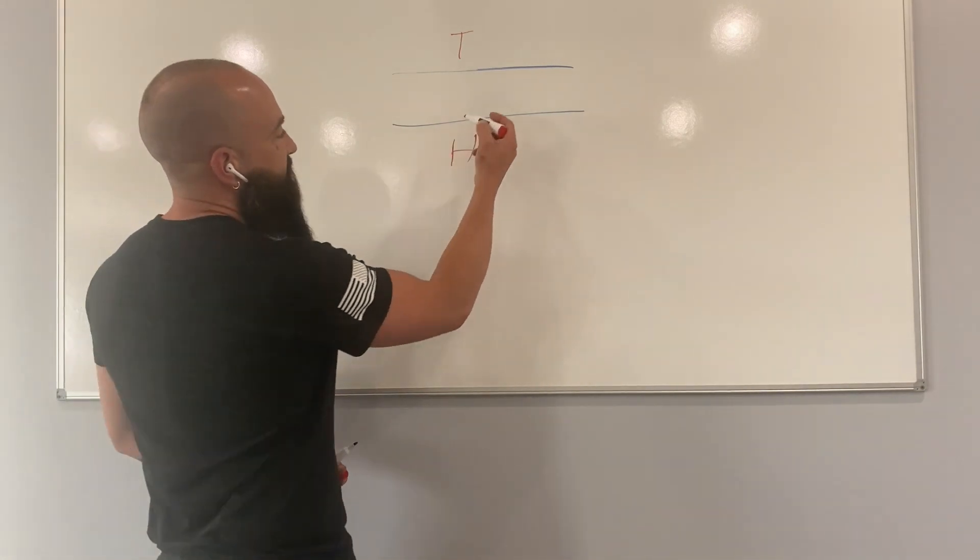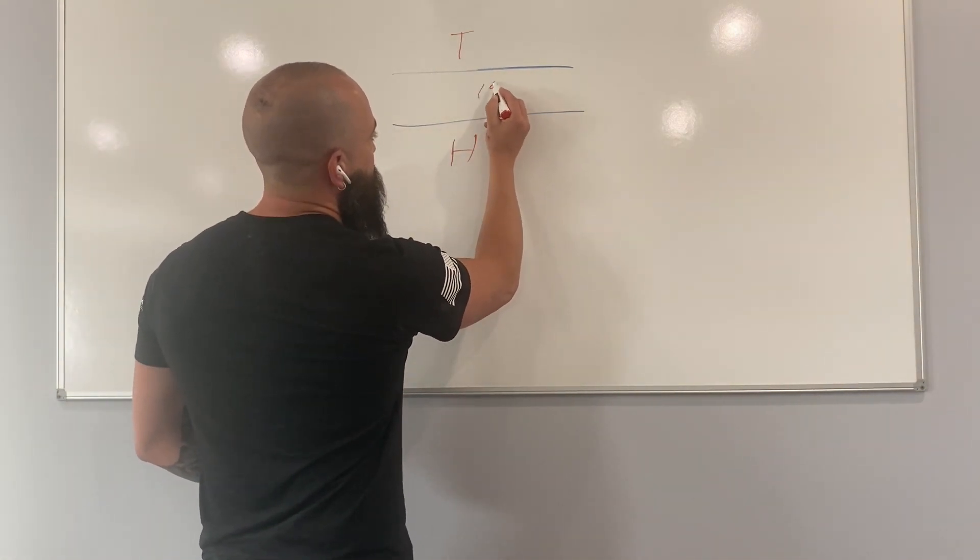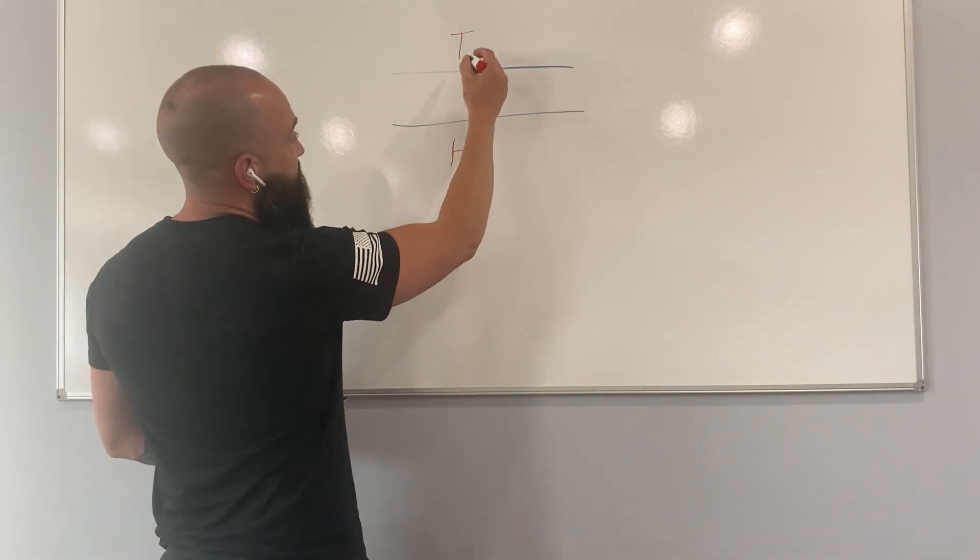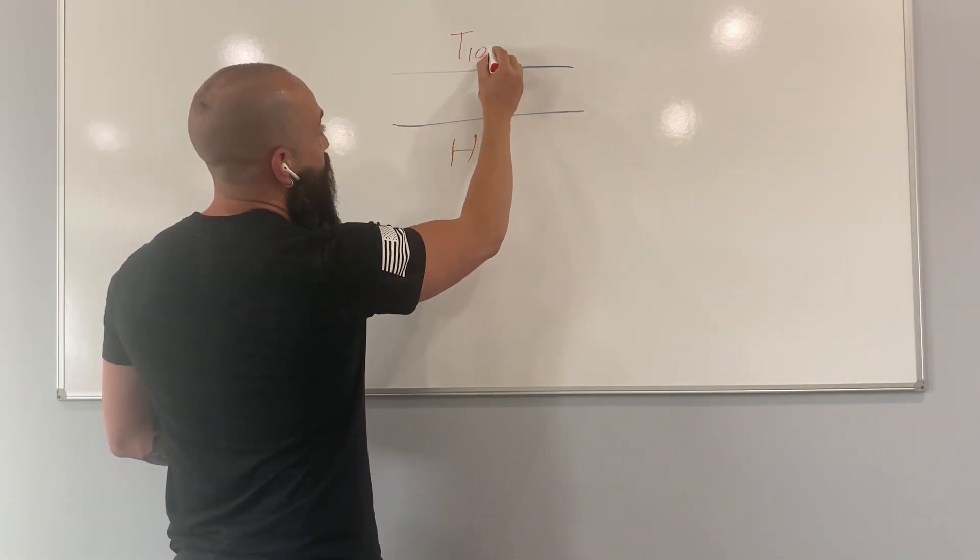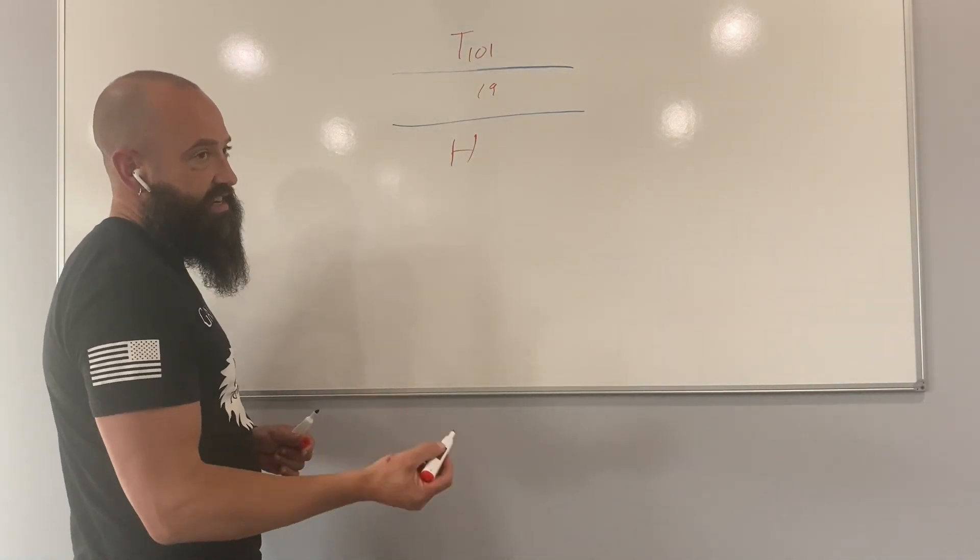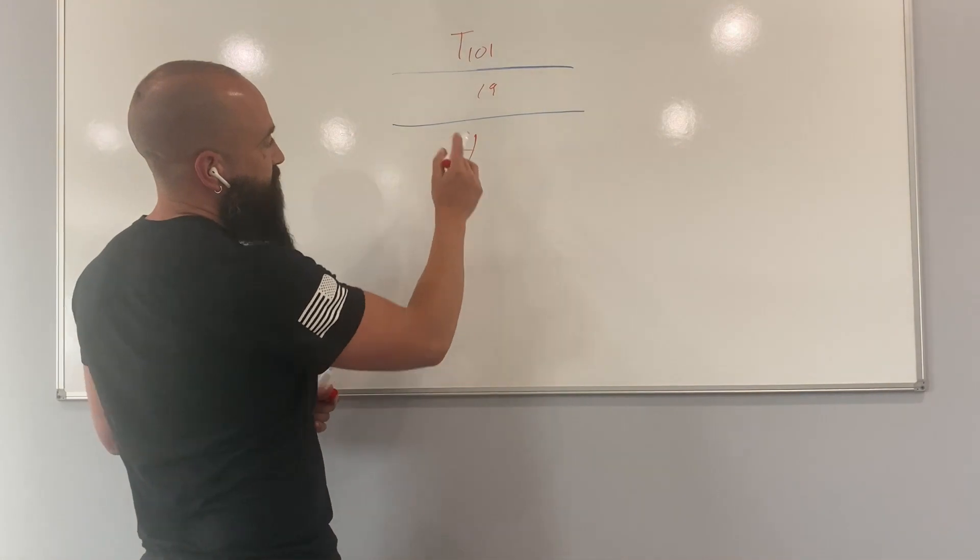So say for example, this resisted 19 degrees, we had 120 here, it started at 75 and it stopped raising at 101 degrees up here, it resisted 19 degrees. That would say that was an R19 material.